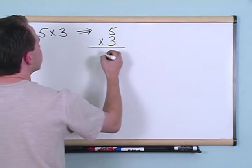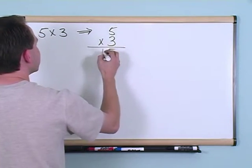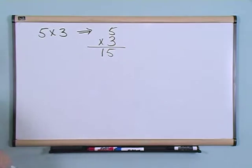5 times 3 is 15, so you just write 15 down, just like this. You just write 15 down just like this.